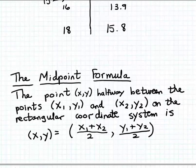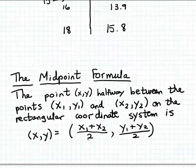The midpoint formula is used to find the point halfway between two given points — (x₁, y₁) and (x₂, y₂) — on the rectangular coordinate system. It tells us to average the coordinates of the two given points. To find the x coordinate of the midpoint, we average the two x coordinates, and to find the y coordinate of the midpoint, we average the two y coordinates.